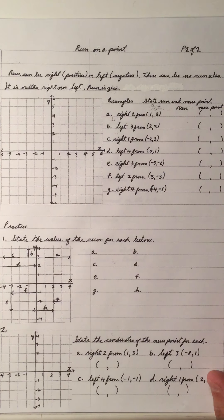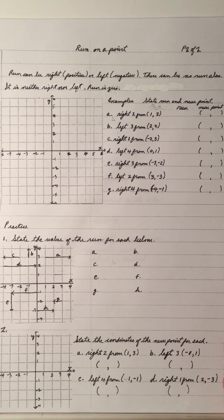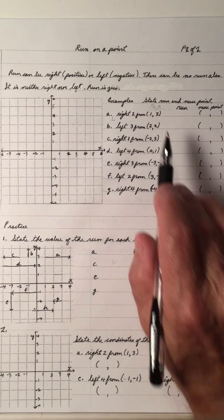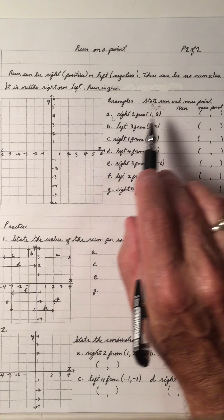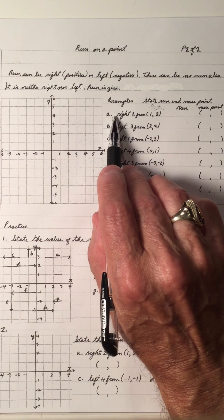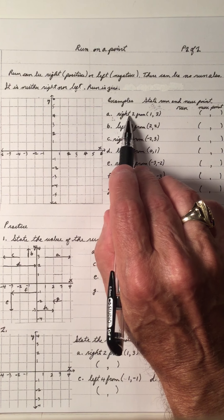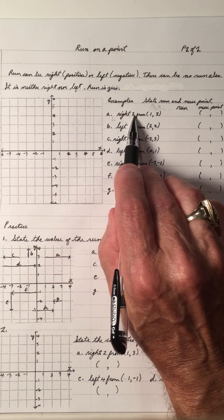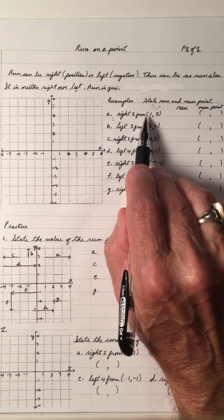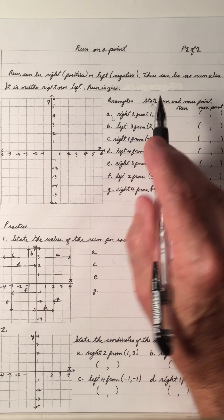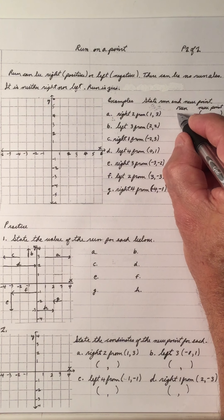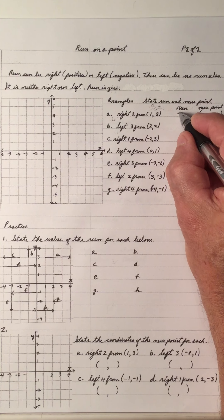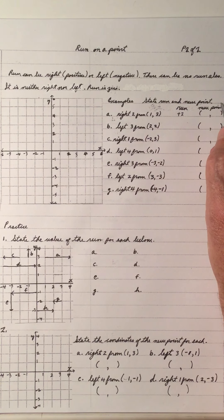Let's do some examples. State the run and the new point. A: right two from the point (1, 3). Right two means the run is a plus two.